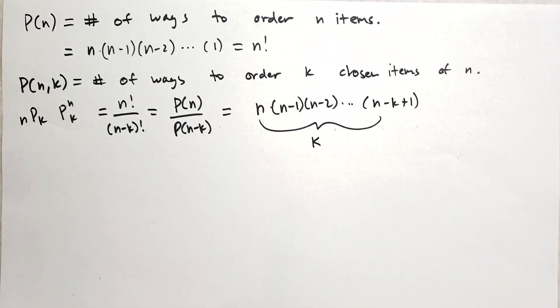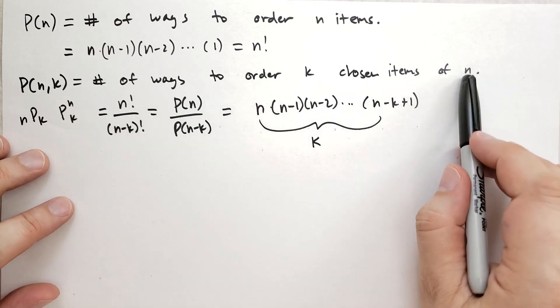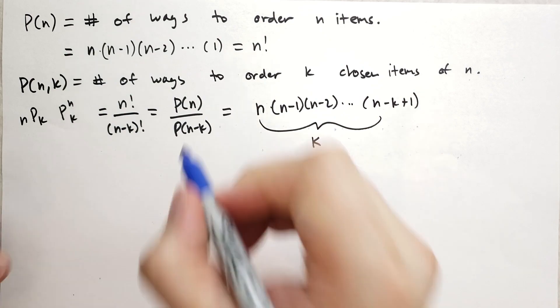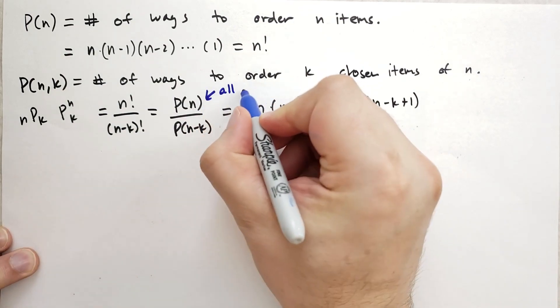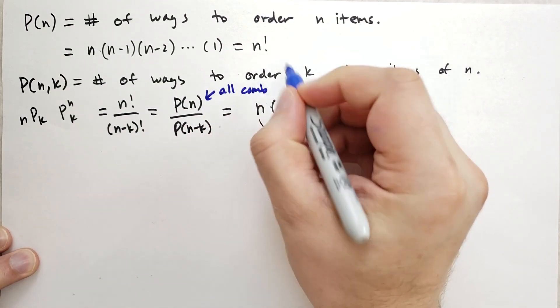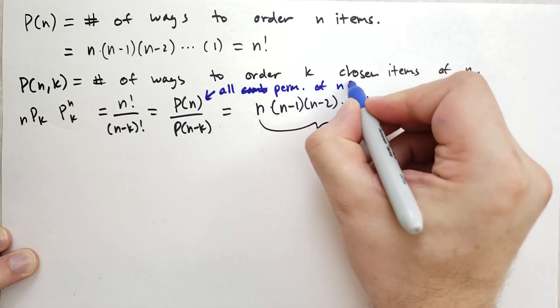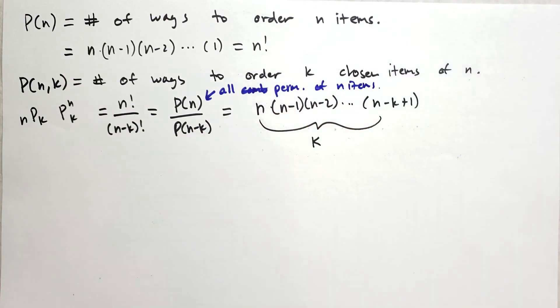But really another way to think of this is if you take these N items and you list out all the possible combinations, that's what this right here, this is all combinations, or permutations, I should say, permutations of N items. And then you say, we actually don't need to list all of these out. The last N minus K items, they can be anything. We don't care. We're not going to count them. We're going to divide them out because we're not going to count that many.